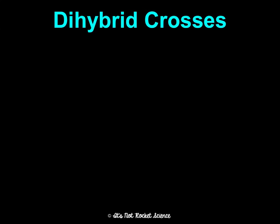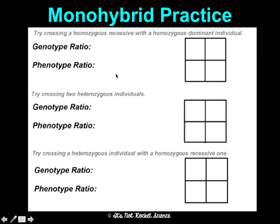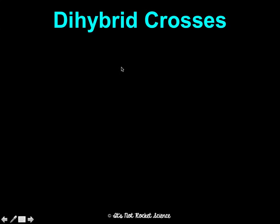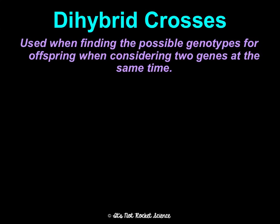Now we're going to talk about dihybrid crosses, which are a bit more complicated. A monohybrid cross looks at one trait at a time, like purple versus white. In dihybrid crosses, we look at two genes at the same time — for example, what's the likelihood of getting blonde hair and blue eyes, or a pea plant having purple flowers and wrinkled pods?